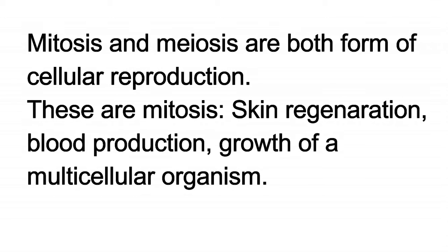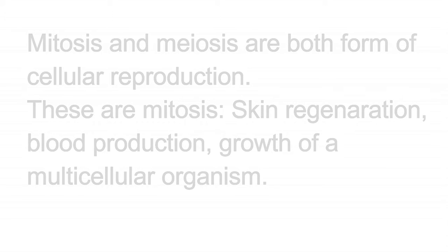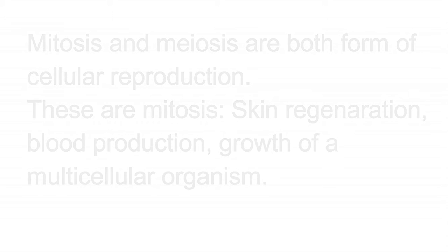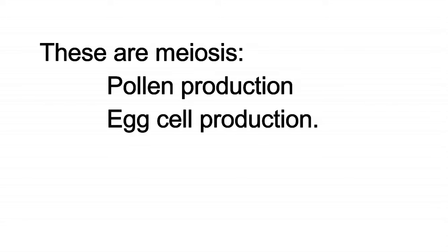Mitosis and meiosis are both forms of cellular reproduction. Examples of mitosis include skin regeneration, blood production, and growth of a multicellular organism. Examples of meiosis include pollen production and egg cell production.